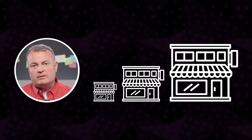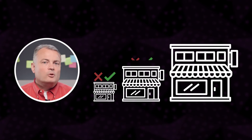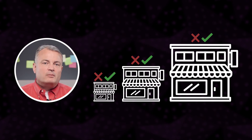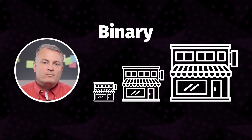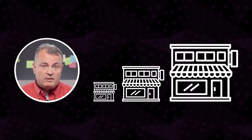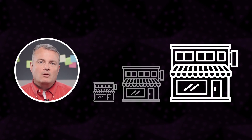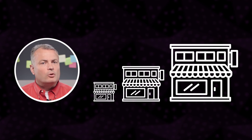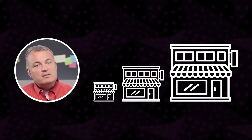If there are only two possible categorical outcomes, such as yes or no, or true or false, then the variable can be described as binary. If there are more than two possible categorical outcomes, such as small, medium, or large, or pay on time, pay late, or default on a payment, then the variable can be described as non-binary.